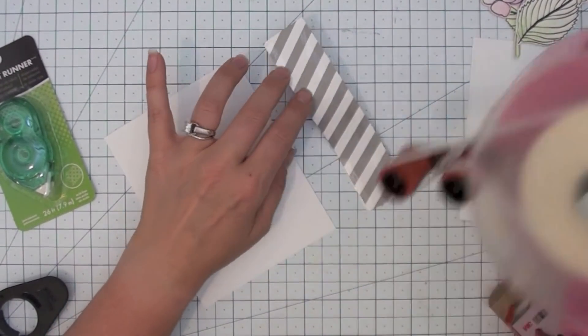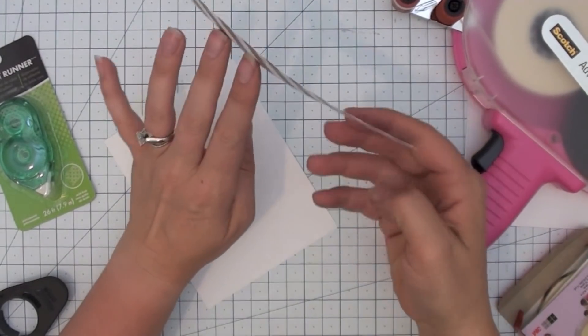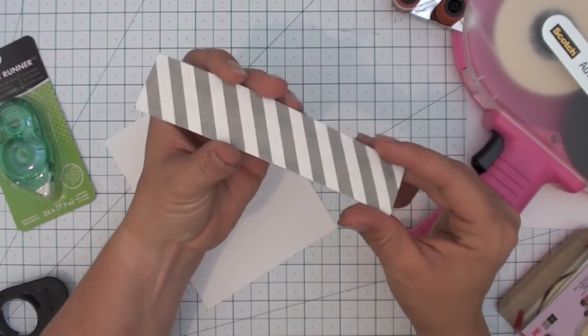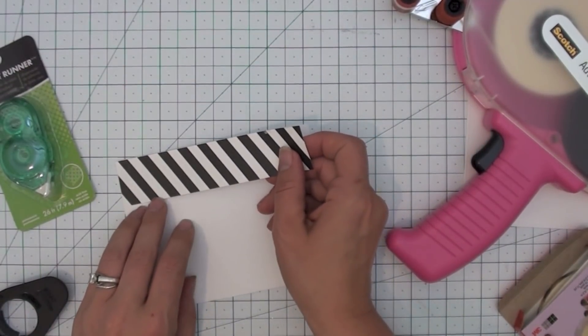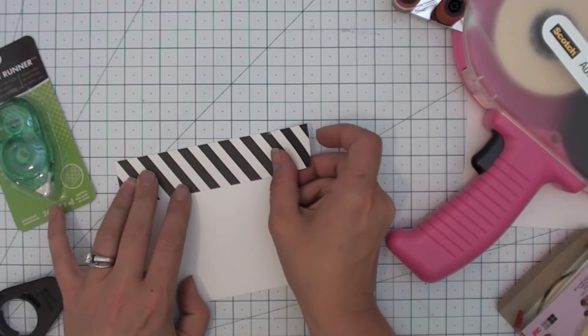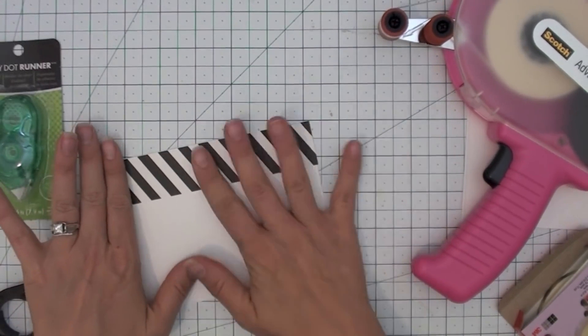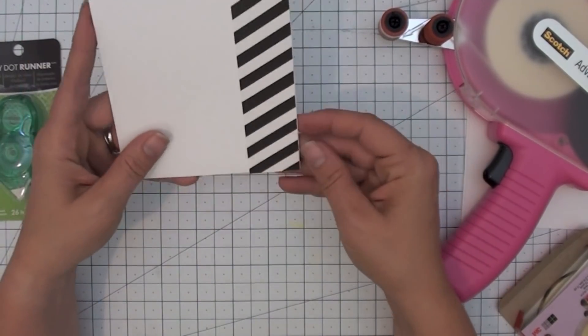As you can see, it's very sticky and you can see the little lines of tape. You would use something like this for holding two pieces of paper together—it could be cardstock to cardstock or pattern paper to cardstock. You can use it for paper piecing and all sorts of different techniques.